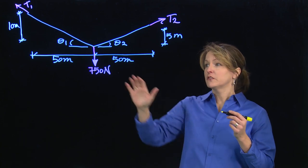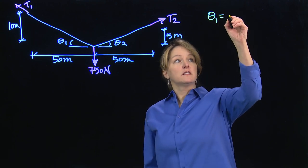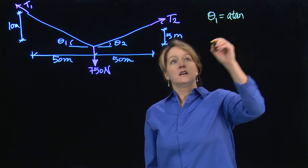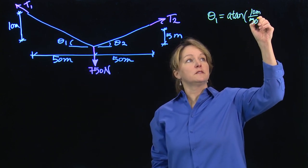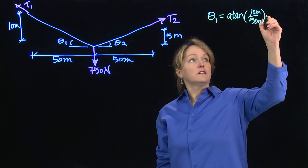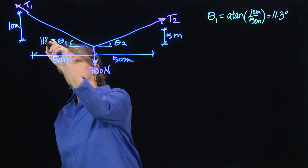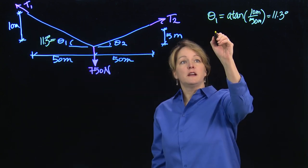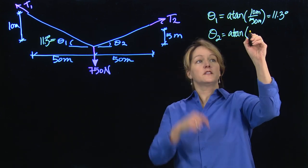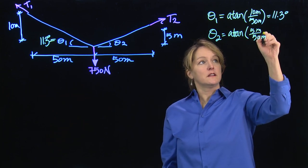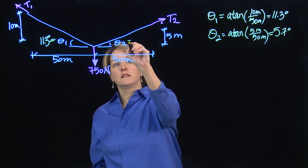My first step is I'm going to try to figure out these angles. I should be able to use geometry to figure out these angles. So I can take the inverse tangent of, in this case it would be 10 meters over 50 meters. That is this angle, and that was just based on geometry. And my second angle, similarly, I will take the inverse tangent of 5 meters over the 50 meters, and that one is 5.7 degrees.